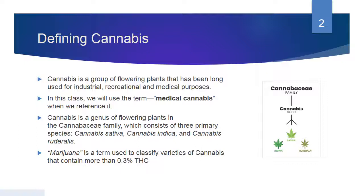Marijuana is a term used to classify varieties of cannabis that contain more than 0.3% THC. When we look at these three different concepts, we're also realizing that there are other issues, especially with the THC and CBD, which we will be discussing in great detail.